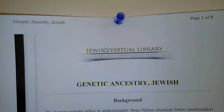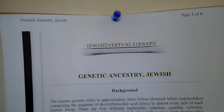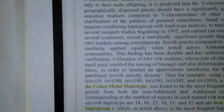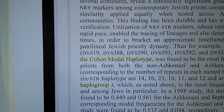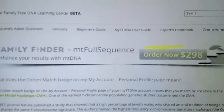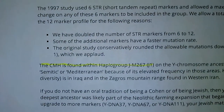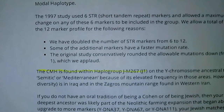I want you to go to the Jewish Virtual Library and look up genetic ancestry for the Jewish people — this is my main reference. According to the Jewish Virtual Library itself, on page 7, the text clearly states that the Cohen Modal Haplotype — the priesthood — is found within haplogroup J. Family Tree DNA offers a test for this Cohen Modal Haplotype, and according to them it is found within haplogroup J-M267.